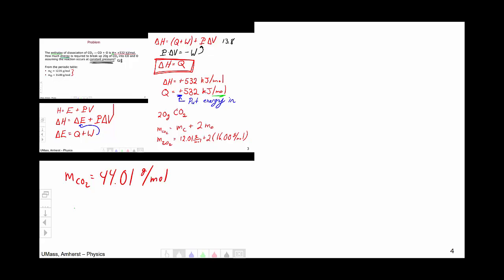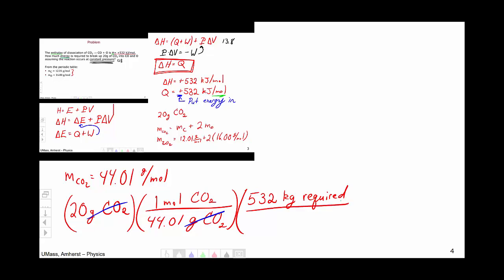Now we have everything we need to solve the problem. We have 20 grams of carbon dioxide in our sample. We know that one mole of carbon dioxide is 44.01 grams of carbon dioxide. We know that I need to put in 532 kilojoules for each mole of carbon dioxide. And so we therefore need to put in 241 kilojoules of energy as heat to dissociate carbon dioxide into carbon monoxide and oxygen.